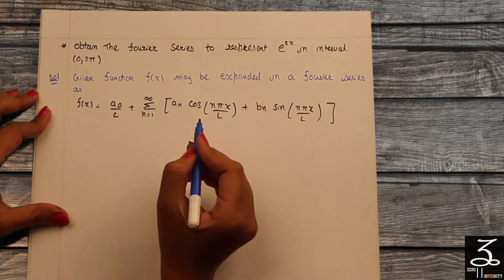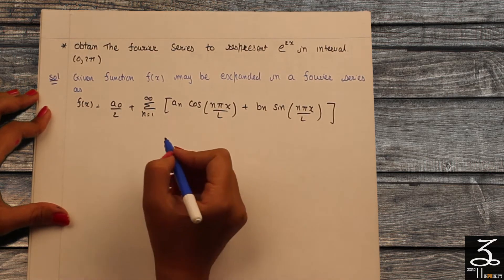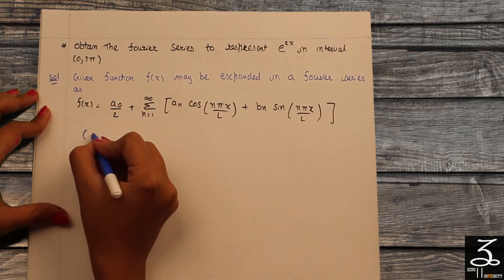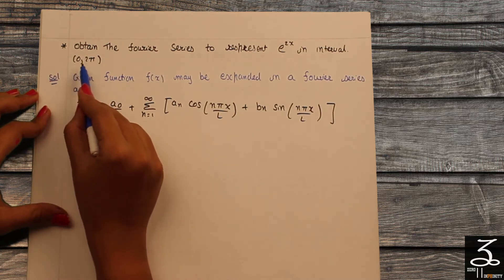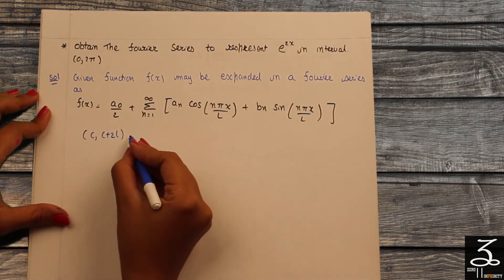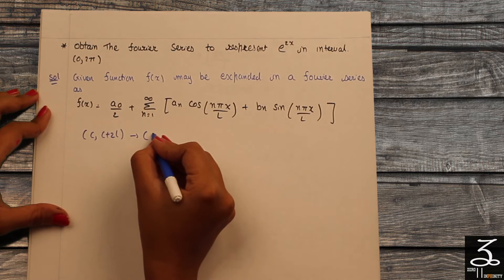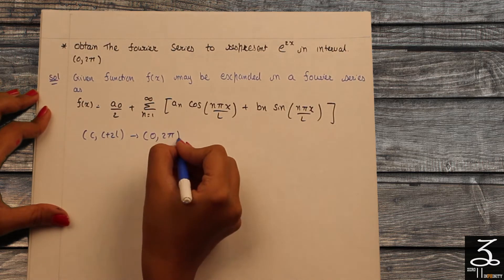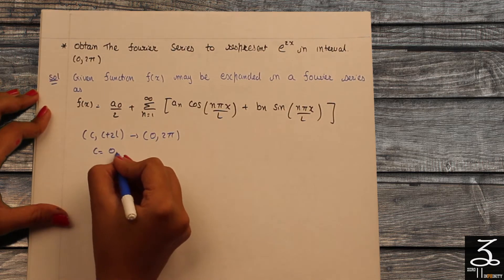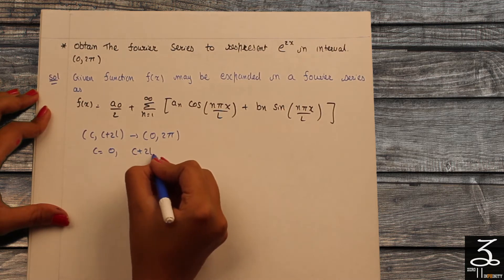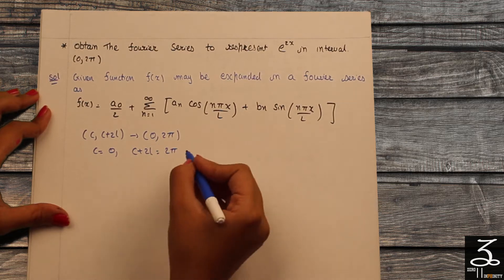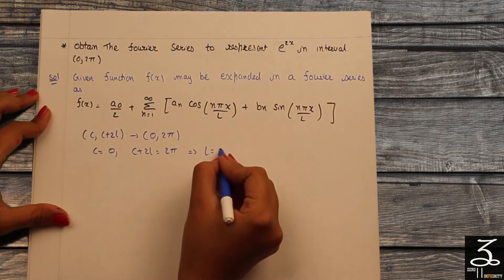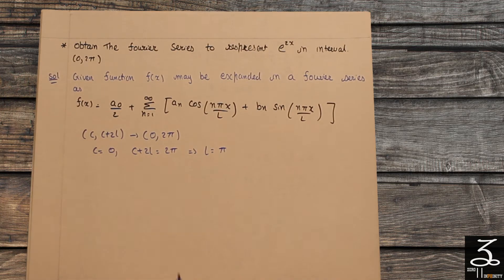First of all, we find the value of l. For that, we compare the interval with c to c+2l. Here, the interval is 0 to 2π. Comparing 0 to 2π with c to c+2l, we get c=0 and c+2l=2π. Substituting c=0, we obtain l=π. Now we have the values of c and l.